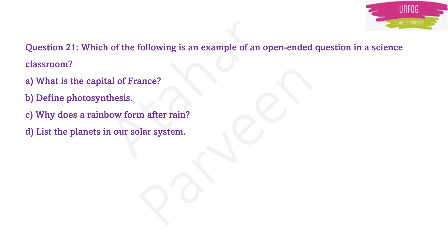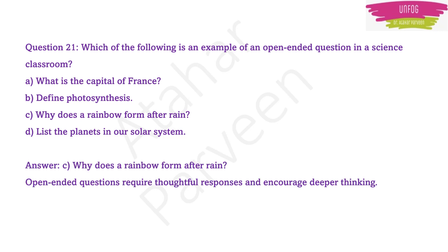By reading the options, one thing which comes to mind is that specific answers exist for the capital of France, the definition of photosynthesis, and the list of planets. But option C — 'Why does a rainbow form after rain?' — is a different type of question. These are known as open-ended questions, which require thoughtful responses and encourage learners to think deeply. Options A, B, and D can be answered by anyone, but option C requires a thoughtful process to formulate a response.